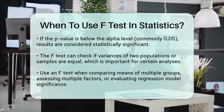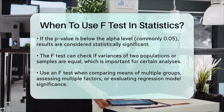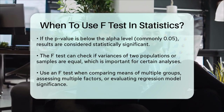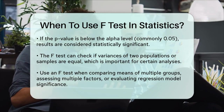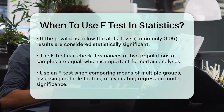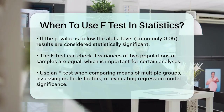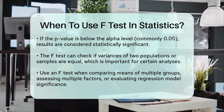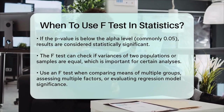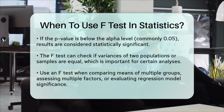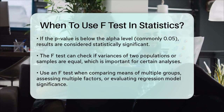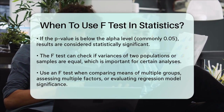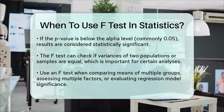In addition, the F-Test can be used to check whether the variances of two populations or samples are equal, which is particularly useful in certain statistical analyses where equal variances are an assumption. To sum it up, use an F-Test when you need to compare the means of multiple groups, assess the impact of multiple factors in an experiment, or evaluate the overall significance of a regression model. It's a powerful tool that helps you understand whether there are significant differences or effects in your data.